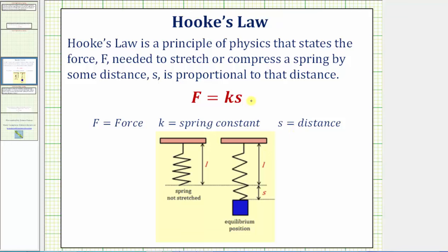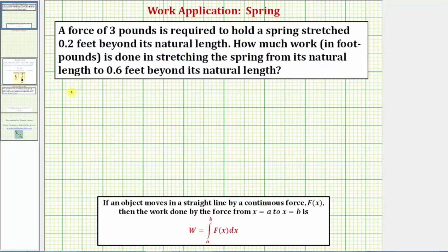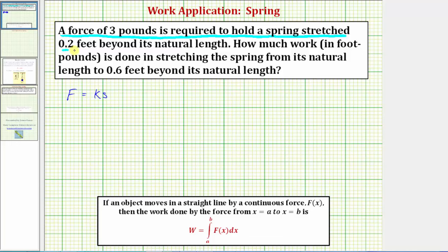So we'll first use Hooke's law to find the spring constant, which will then give us the force function. So using Hooke's law, f equals k times s, and the information given in the first sentence, where a force of three pounds is required to hold a spring stretched 0.2 feet beyond its natural length, we can find the spring constant k.